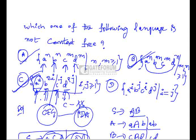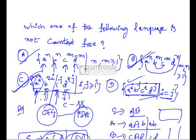For option D, a^i b^j c^i d^j where i = j — we need to maintain all four counts equal simultaneously. That is not possible with a single-stack PDA, which can only track two matching counts at a time. Therefore this language cannot be recognized by a pushdown automaton, so it is NOT a context-free language. Option D is the correct answer.